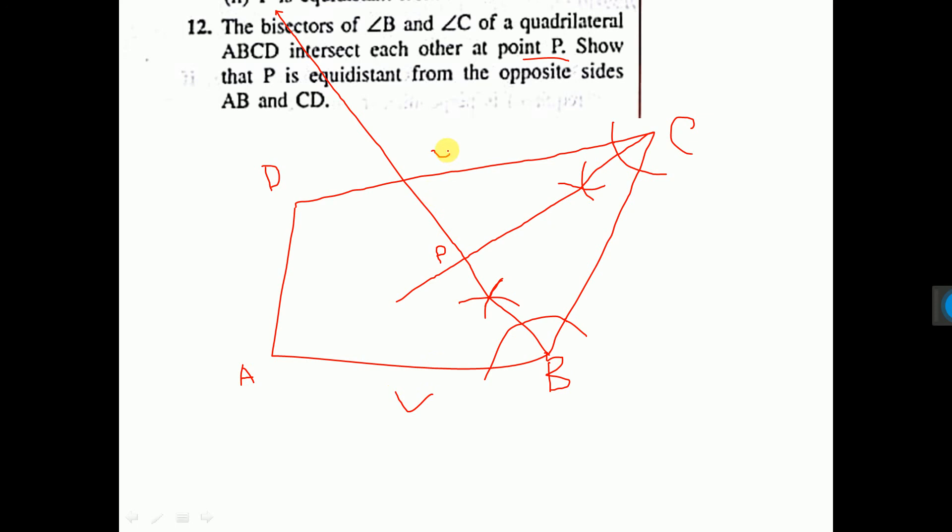Now, tell me the proof. Since BK, I am giving them here K. Since BK is the bisector of angle B, therefore any point on BK is equidistant from AB and BC. Therefore, P is equidistant from AB and BC. Remember this line.